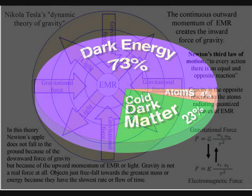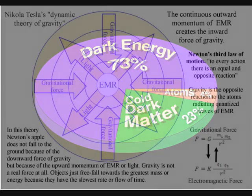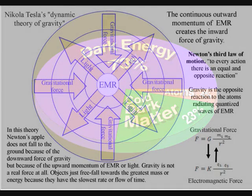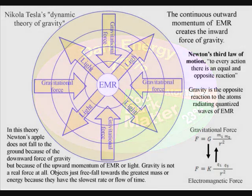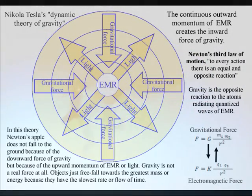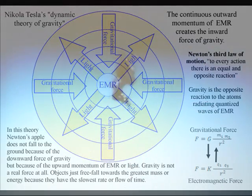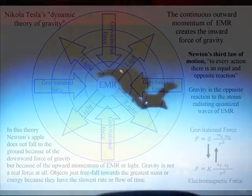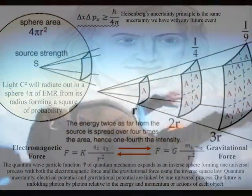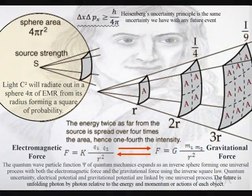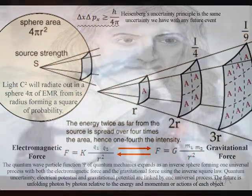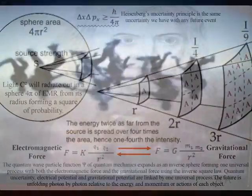This video will explain dark energy and dark matter by explaining a universal process of energy exchange, with gravity being a secondary force to the electromagnetic force. This can be seen mathematically with both gravitational fields and electromagnetic fields sharing the inverse square law. In this theory, this represents the dynamic geometry of a universal process that is interactive and relative to its environment.